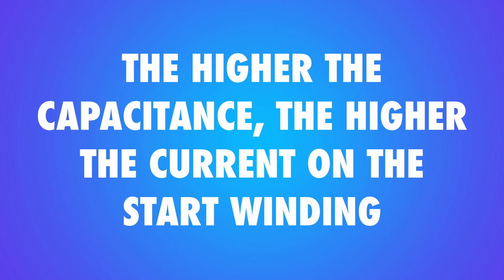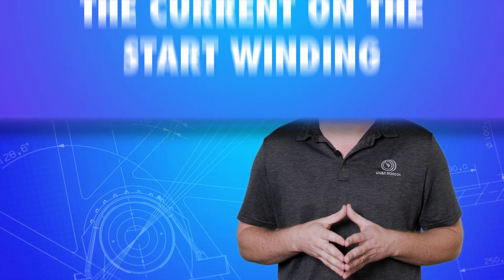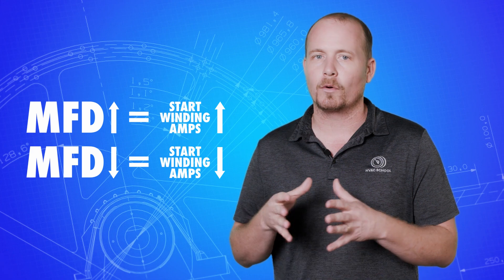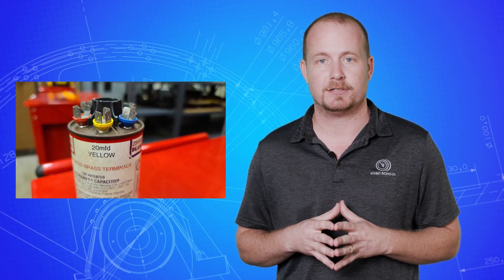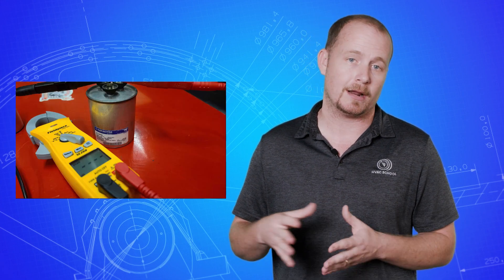The higher the capacitance, the higher the current on the start winding. On a properly wired PSC, or permanent split capacitor motor, the only way the start winding can have any current move through it is if the capacitor stores and discharges. The higher the MFD or microfarad of the capacitor, the greater the stored energy and the greater the start winding amperage. If the capacitor is completely failed with zero capacitance, it is the same as having an open start winding or an open circuit altogether. Next time you find a failed run capacitor with no start capacitor, read the amperage on the start winding with the clamp to see what I mean.